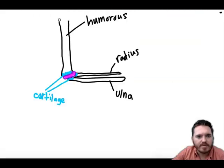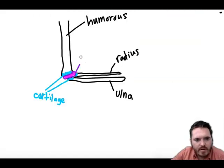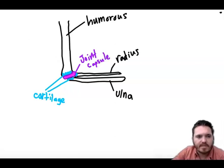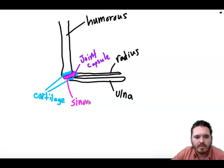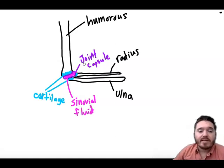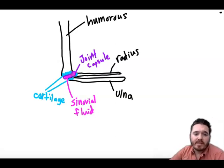And so the joint capsule also allows for the smooth movement. But its main function is really to contain that synovial fluid. Synovial fluid allows for greater shock absorption because it is a fluid. And it aids in that smooth movement of the muscles.